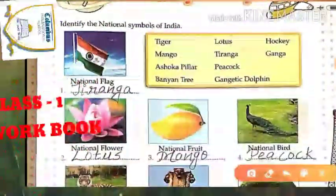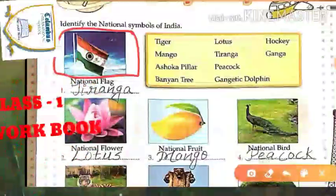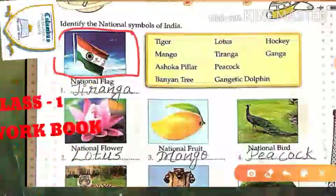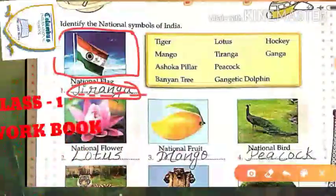Let's start reading about these national symbols. The first picture you can see is the national flag. You have seen it every year on 15th August and 26th January when we hoist our flag. So what is the national symbol for the national flag? It is your Tiranga. We also call it Tiranga — spelling: T-I-R-A-N-G-A.